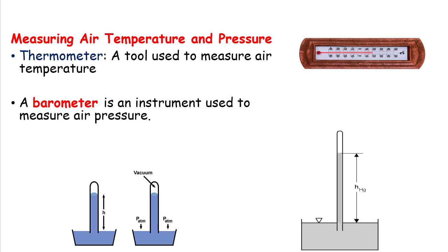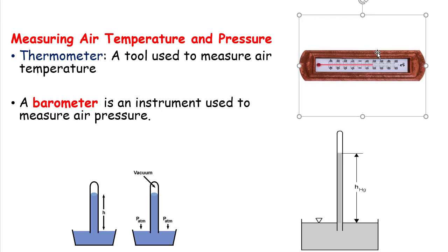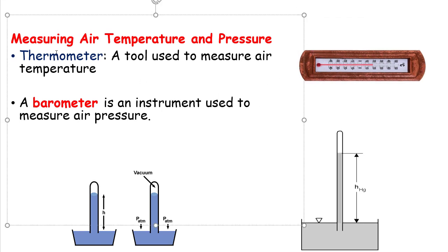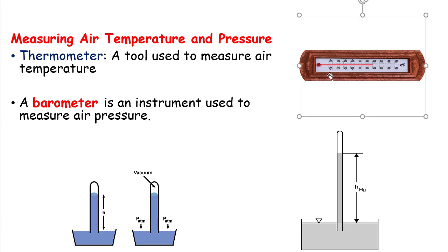Measuring air temperature and pressure. First, the thermometer — a tool used to measure air temperature. Inside the thermometer there is mostly alcohol and mercury. Once the temperature increases, the alcohol or mercury expands — that means the level of mercury or alcohol rises up. So we can measure the air temperature.